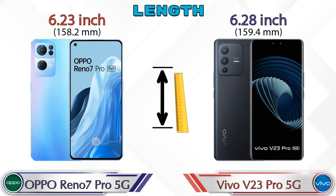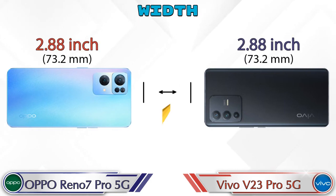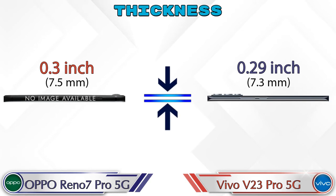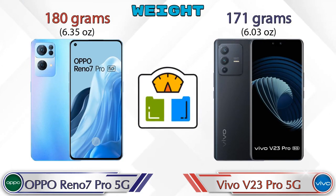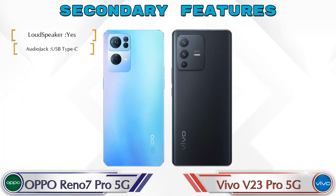Talking about dimensions, the Reno 7 Pro 5G is 6.23 inches long and the V23 Pro 5G is 6.28 inches long. The width is the same in both phones at 2.88 inches. For thickness, the Reno 7 Pro 5G is 0.3 inches and the V23 Pro 5G is 0.29 inches. The Reno 7 Pro 5G weighs 180 grams while the V23 Pro 5G weighs 171 grams.